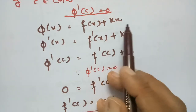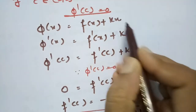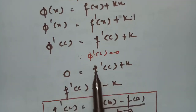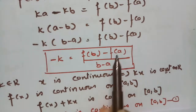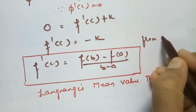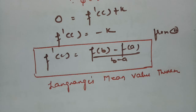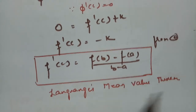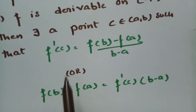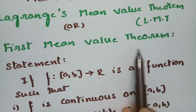Since φ(x) = f(x) + kx, taking the derivative gives φ'(x) = f'(x) + k. Setting φ'(c) = 0, we get f'(c) = −k. Substituting −k = [f(b) − f(a)] / (b − a), we obtain f'(c) = [f(b) − f(a)] / (b − a). This is what was asked to show according to Lagrange's mean value theorem, also called the first mean value theorem. Hope you all understood. Please practice, subscribe, and share with your friends. Thank you.